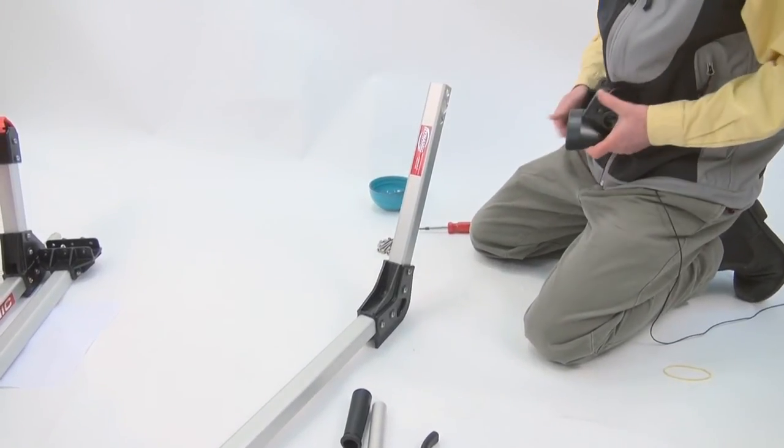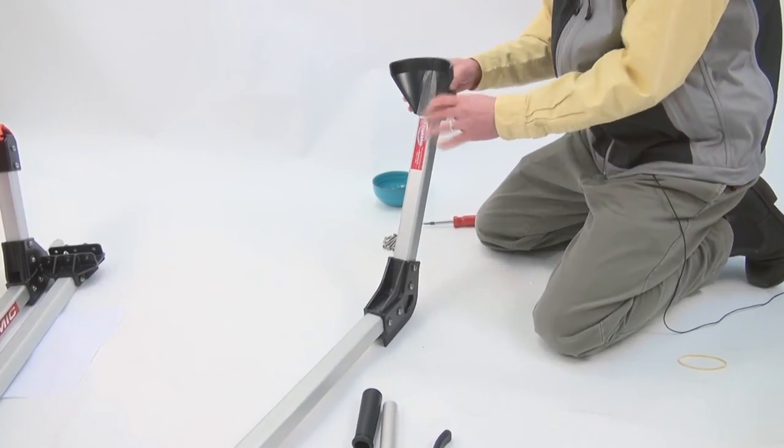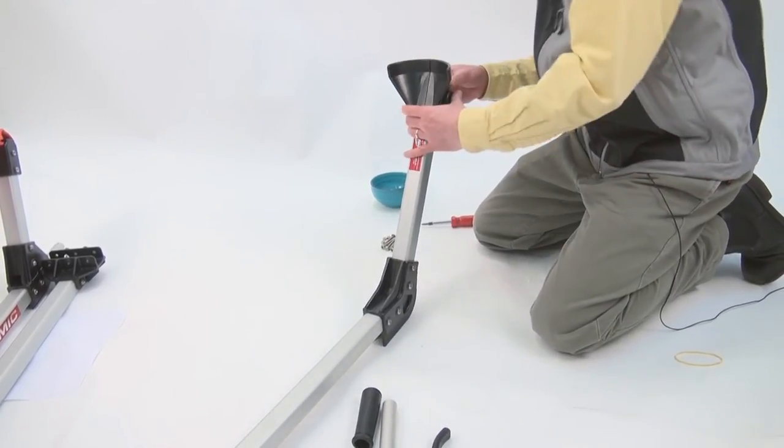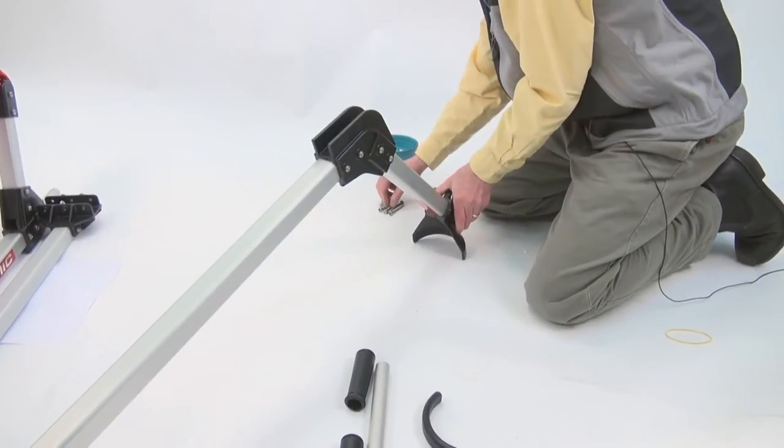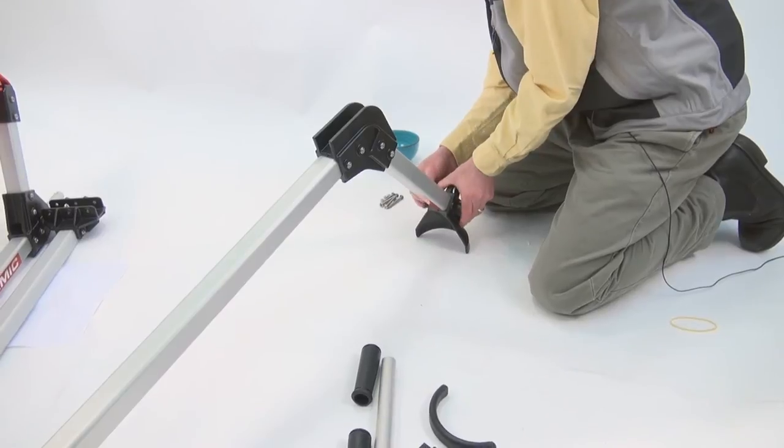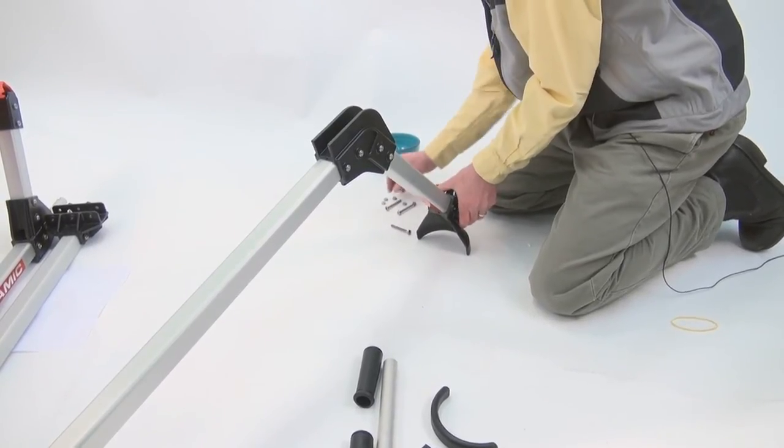This is going to just go on as two halves. Again, just making sure the support faces where the boat's going to be. I'm sure no one will mess that up. Just going to take two screws and two nuts.